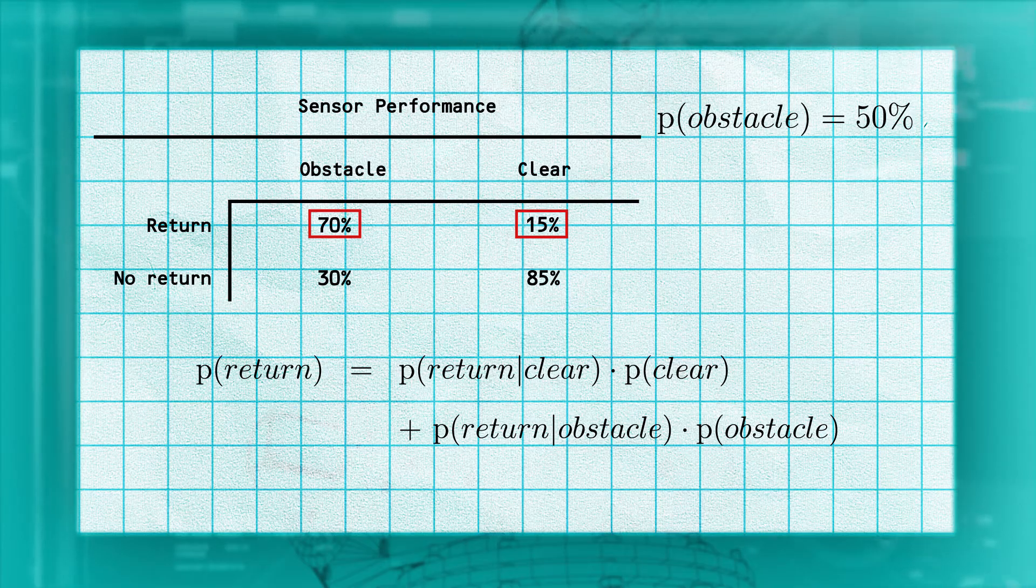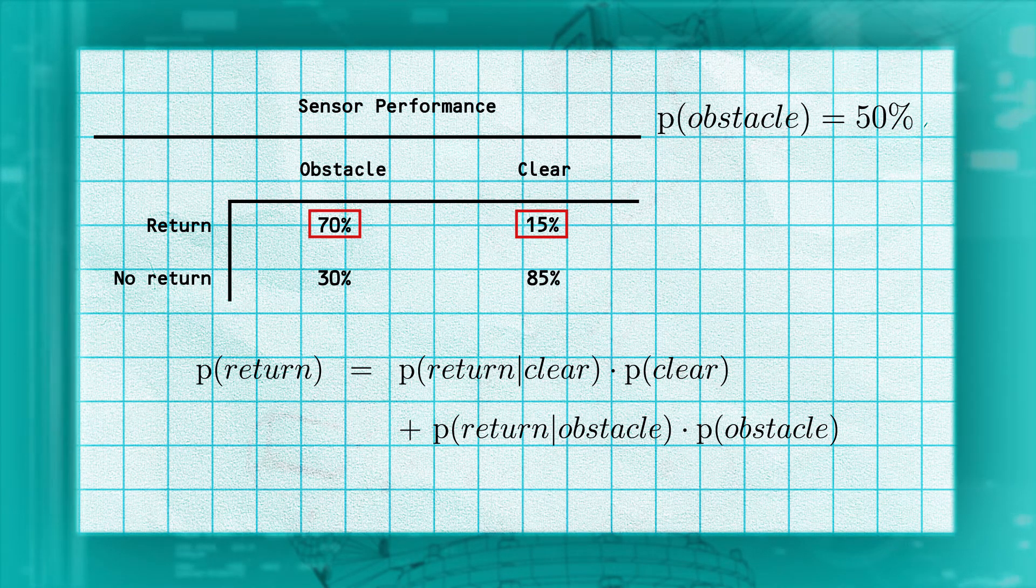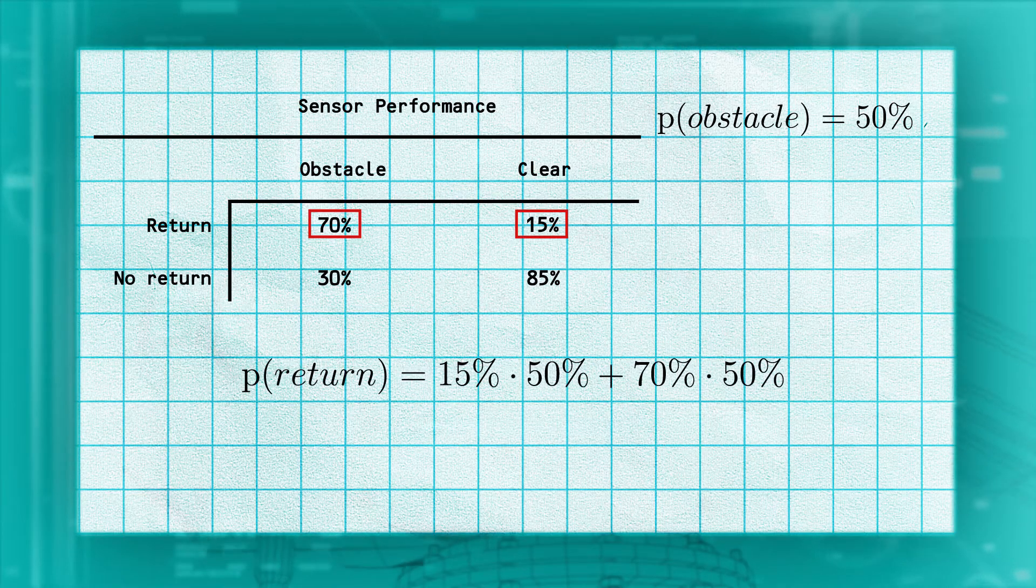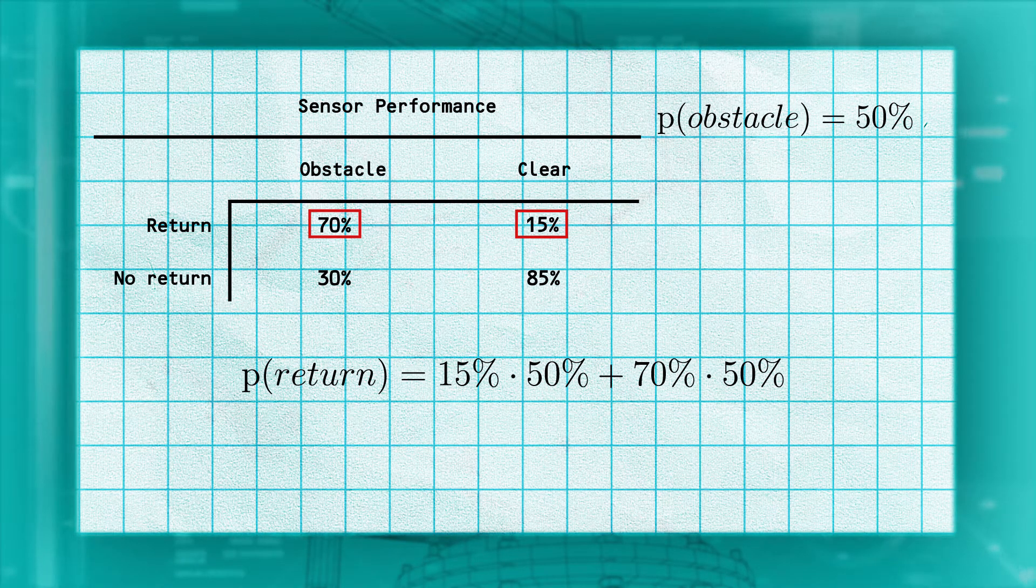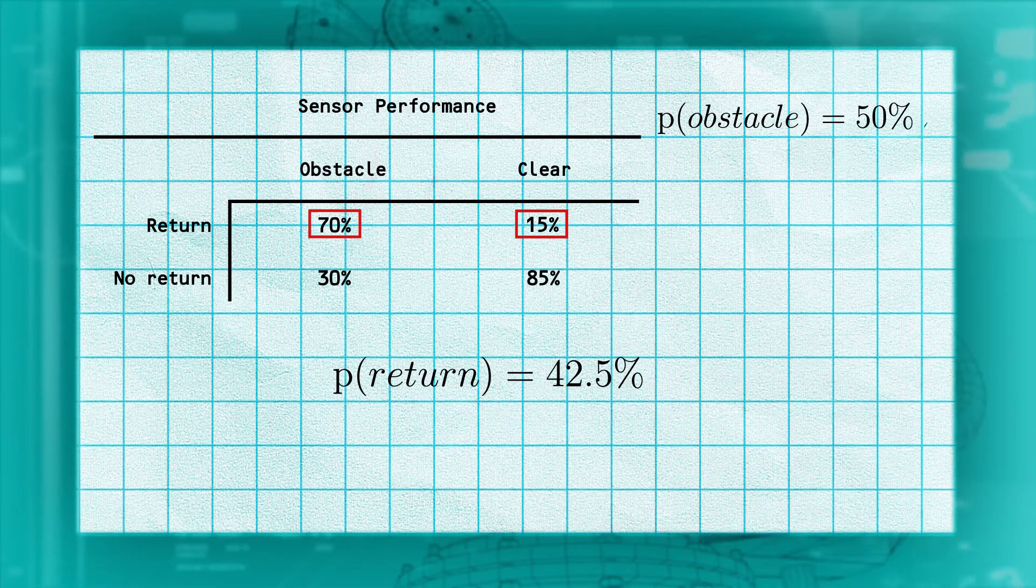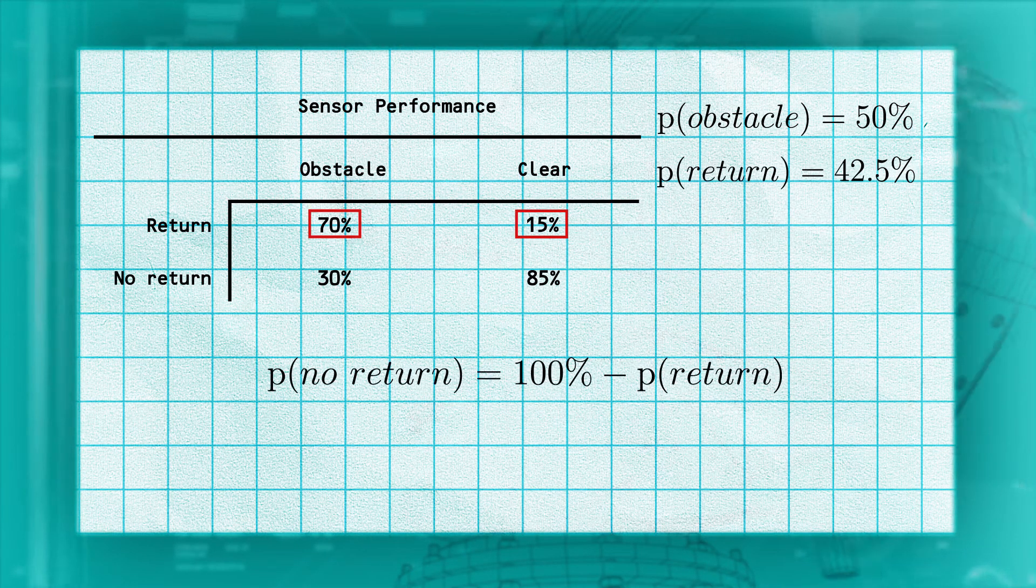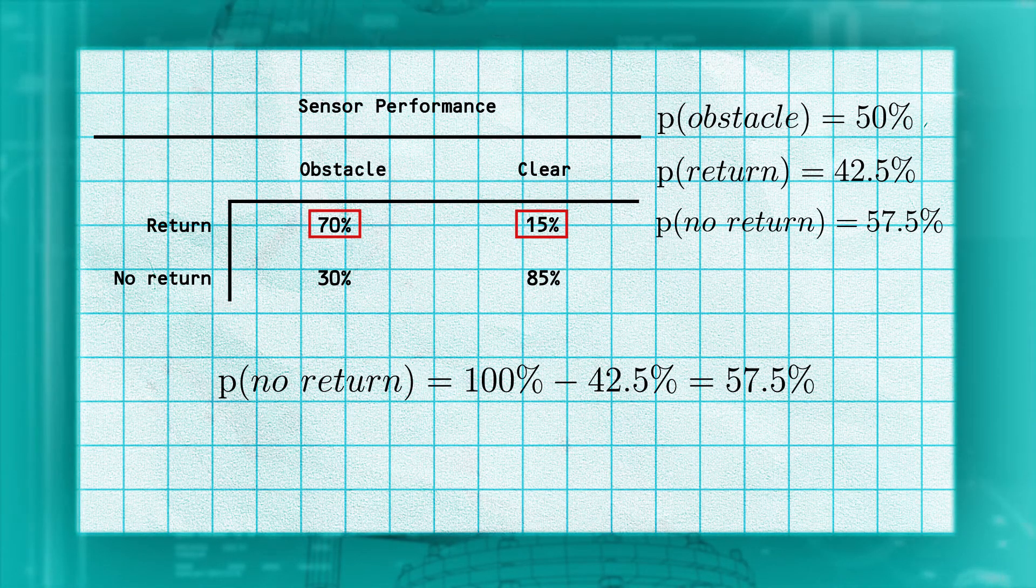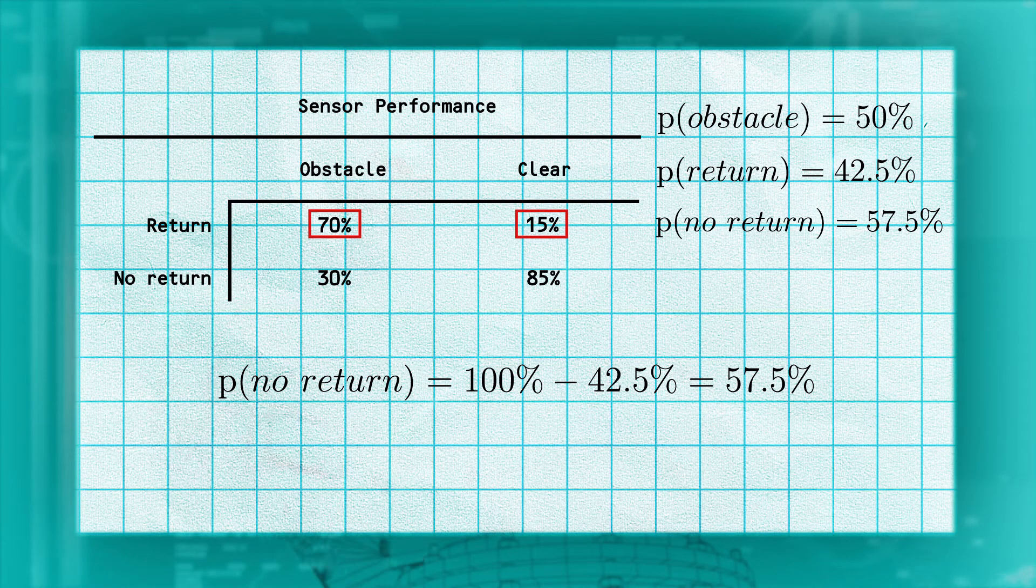Remember that the probability of a clear cell is one minus the probability of an obstacle cell, in this case 0.5. Substituting in, we find the probability of getting a return in all cases is 42.5%. Since we must either get a return or not, the probability of no return is 100 minus 42.5, or 57.5%.